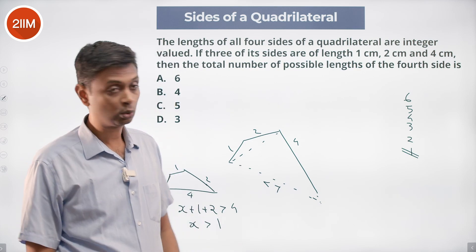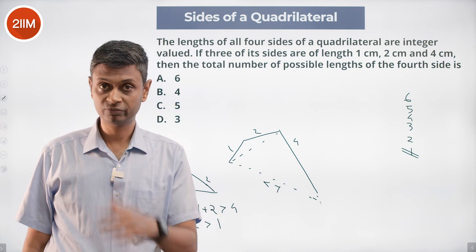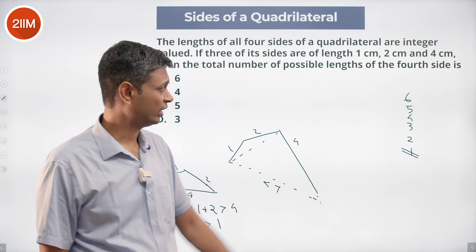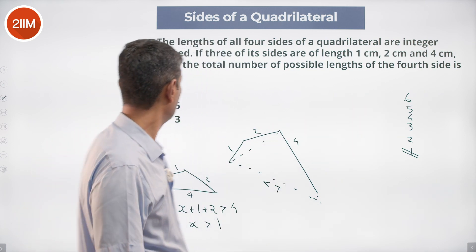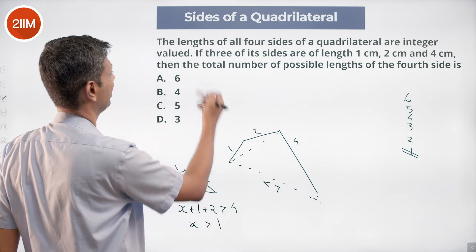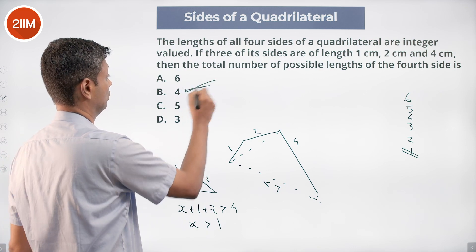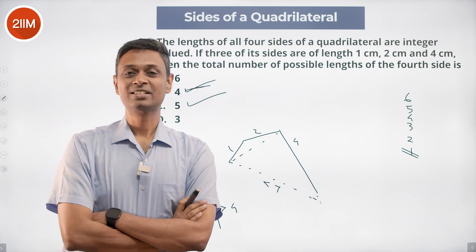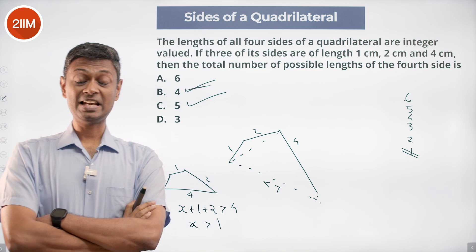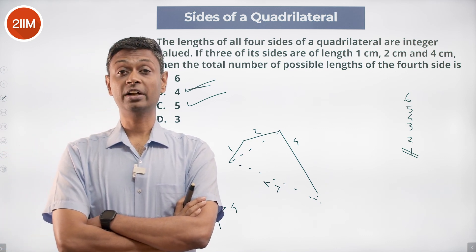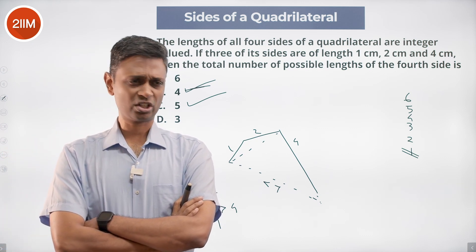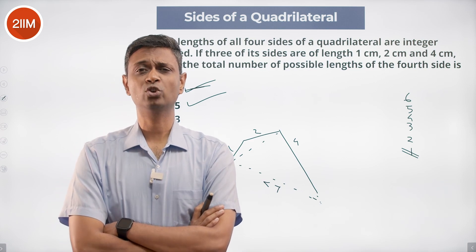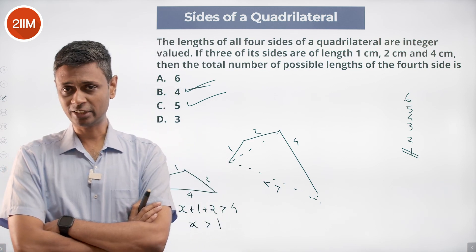We cannot have 1, 1, 2, 4 and we cannot have 1, 2, 4, 7. So the values the fourth side can take are 6, 5, 4, 3, and 2 — that's 5 values. To summarize: the sum of any three sides of a quadrilateral is greater than the fourth, just like the sum of any two sides of a triangle is greater than the third. Apply it twice over, one more layer — that's it, nothing more than that.